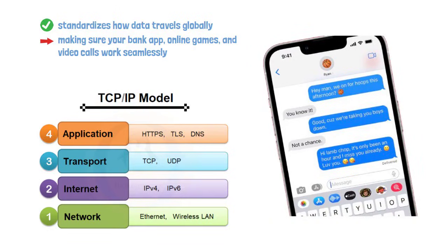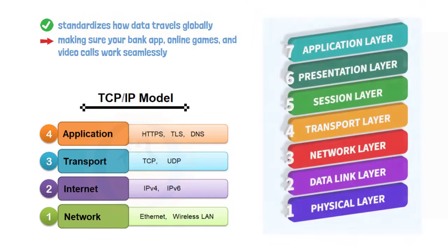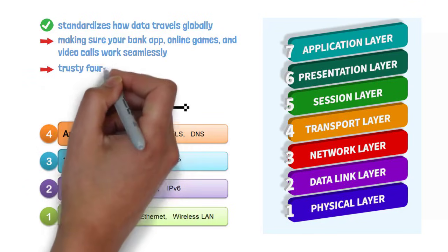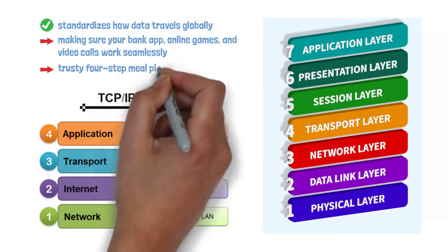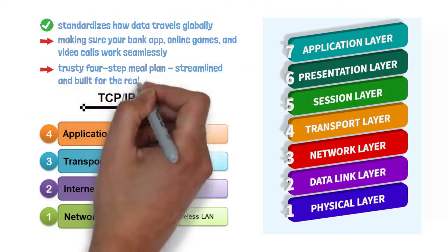Now, you might hear about the OSI model — Open Systems Interconnection — which breaks communication into seven detailed layers. If OSI is a gourmet recipe book with lots of steps, TCP/IP is like your trusty four-step meal plan: streamlined and built for the real world.